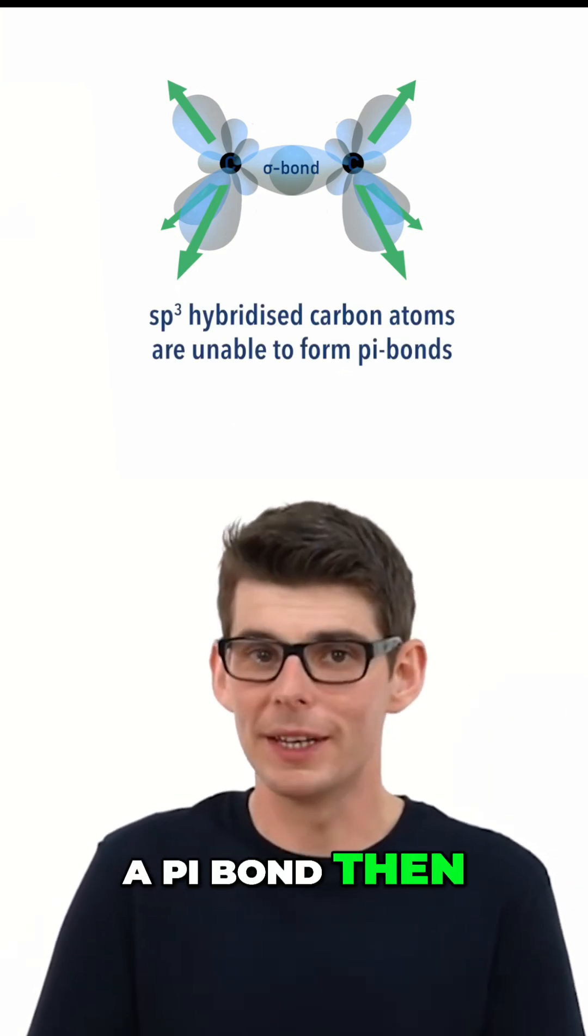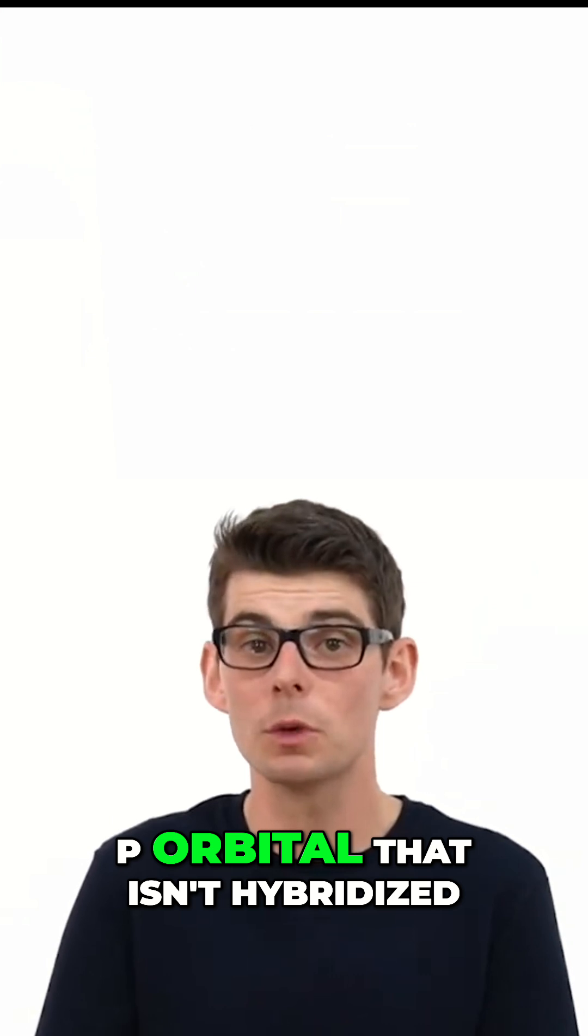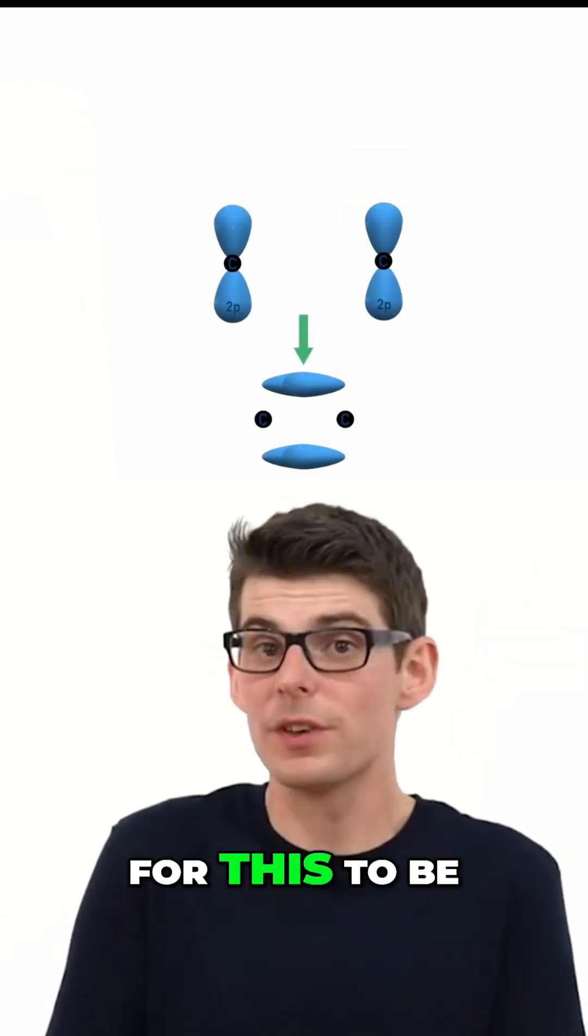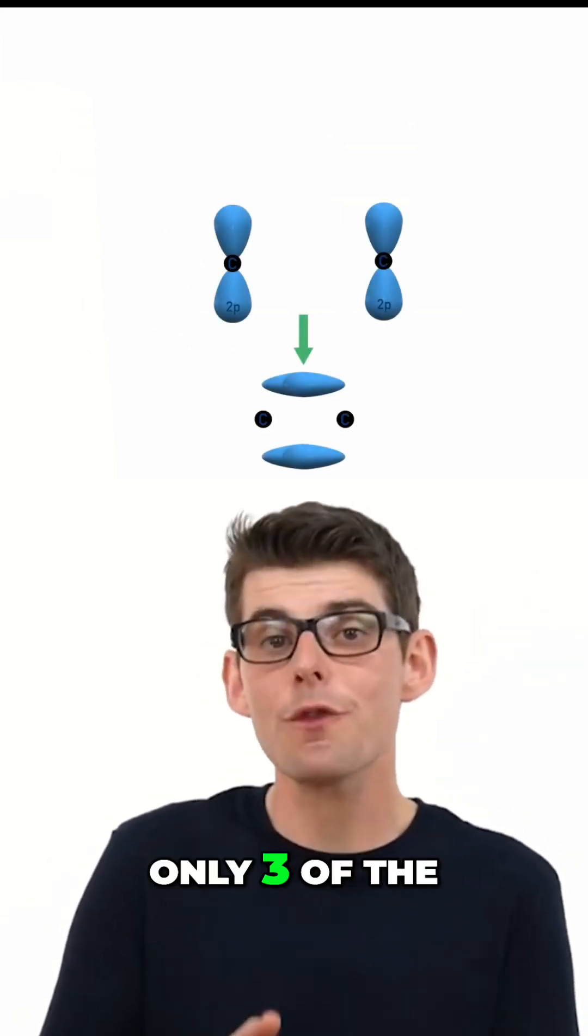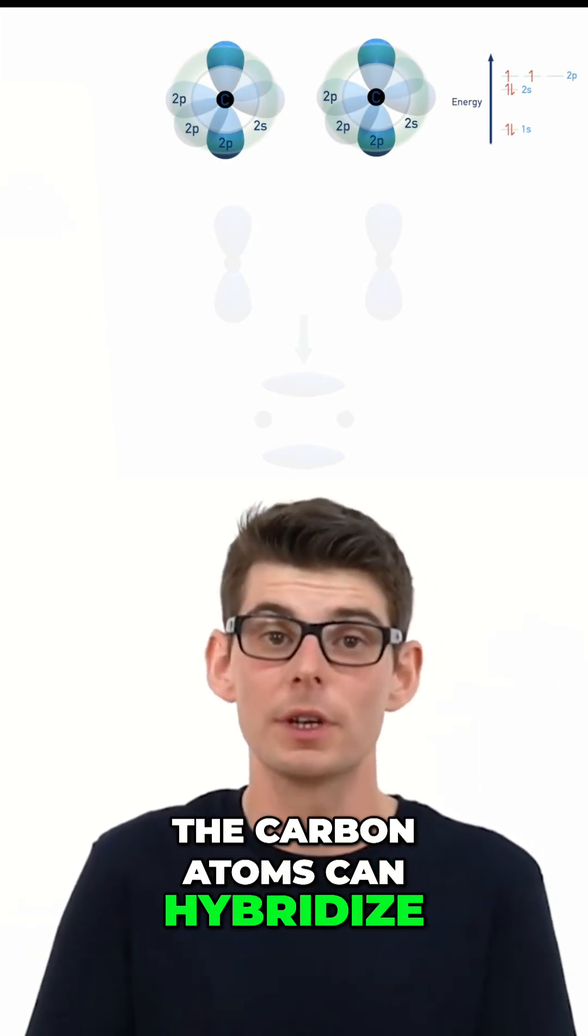In order to form a pi bond then, each carbon atom has to have a half filled p orbital that isn't hybridized. For this to be the case, only three of the four outer orbitals of the carbon atoms can hybridize.